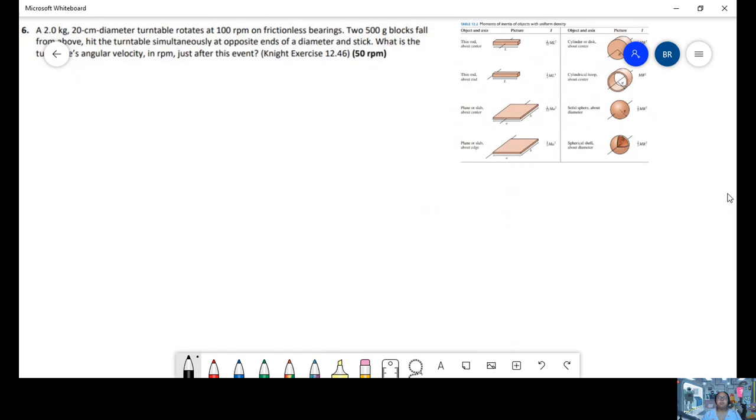For problem 6, we have a 2-kilogram, 20-centimeter turntable that rotates at 100 revolutions per minute on frictionless bearings. Then we have two 500-gram blocks fall from above and hit the turntable simultaneously at opposite ends of the diameter and stick.